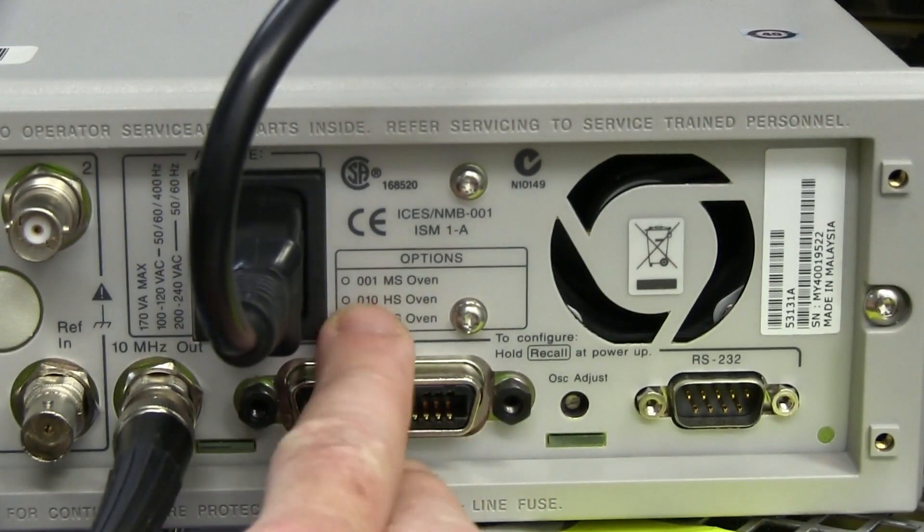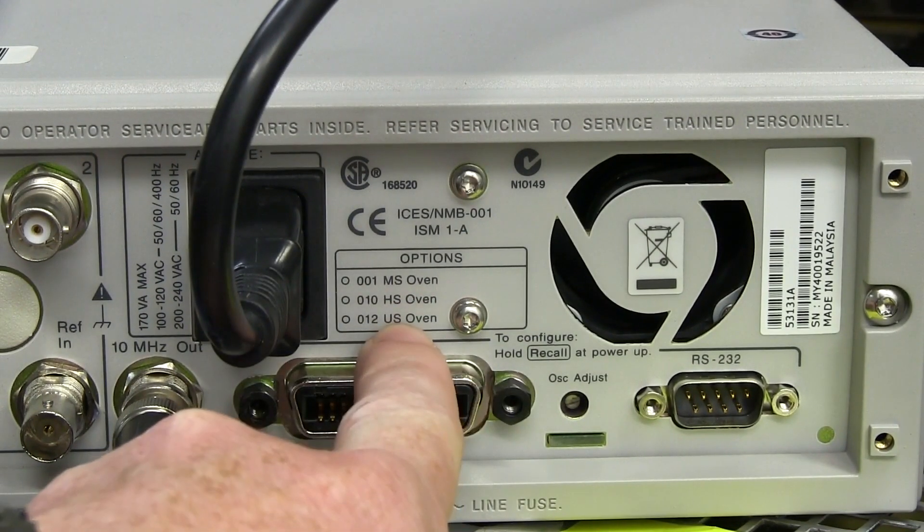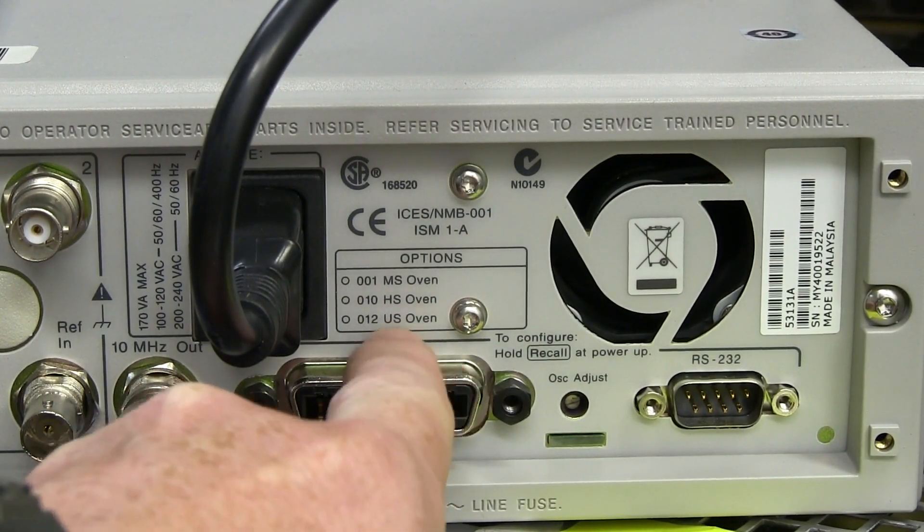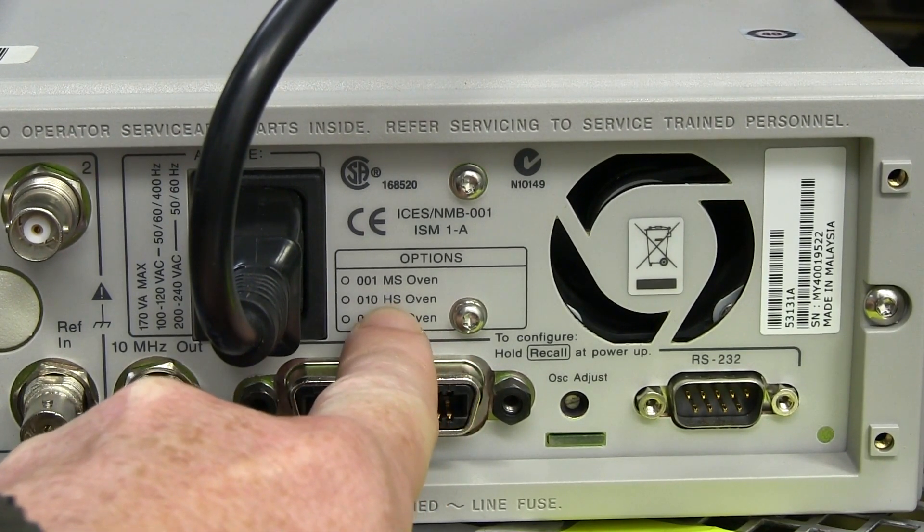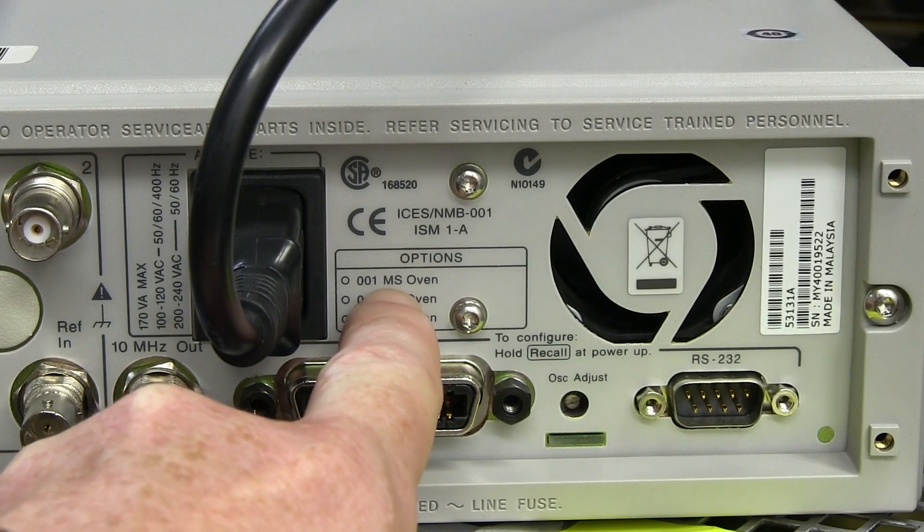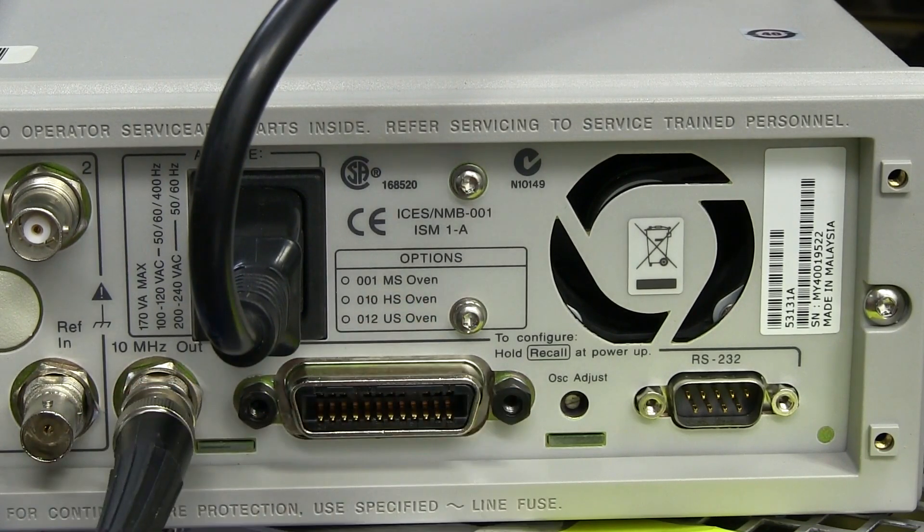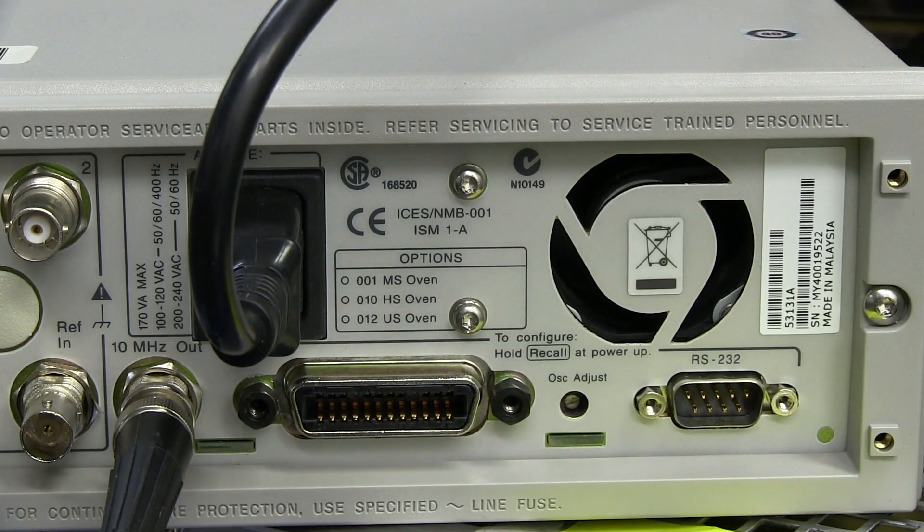You can get the, I'm not sure, I assume that the US, yeah, ultra-stable oven, I guess, is the best one. And there's a high-stability oven, and then there's the, I guess, I don't know, MS medium-stability oven, I guess. But yeah, this doesn't have it. It's just got a regular, you know, SC cut crystal in there, and eh, whatever. Hopeless.